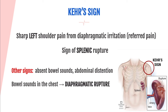Referred pain occurs when injury in one area of the body is felt as pain in a different area, because nerves are part of a huge connected network. In the case of a ruptured spleen with diaphragm irritation, pain travels upward to the left shoulder. Other signs of a ruptured spleen include absent bowel sounds and abdominal distension. If you hear bowel sounds in the chest, that means a ruptured diaphragm — abdominal organs have moved into the chest, which can lead to respiratory failure and rapid deterioration.